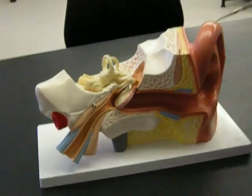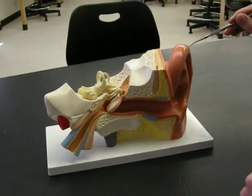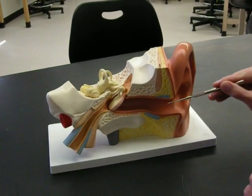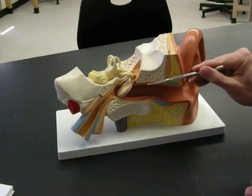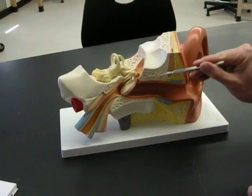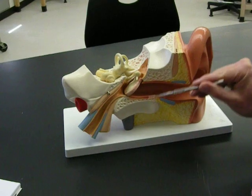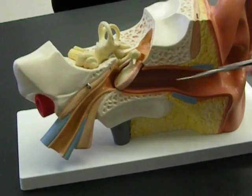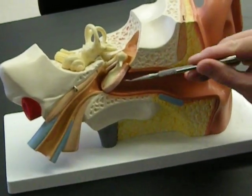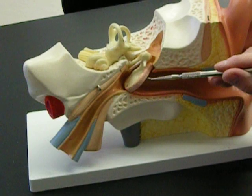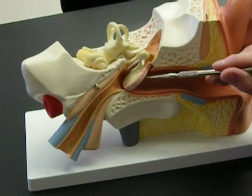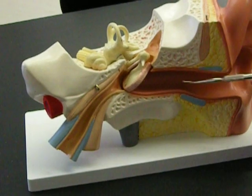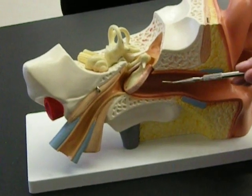This outer portion of the ear is called the auricle — this is what brings in sound. Sound then enters into our skull at the external auditory meatus. This external ear continues all the way until we get to the lateral side of the tympanic membrane.